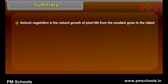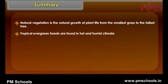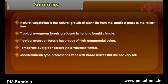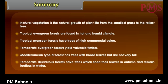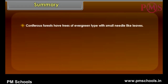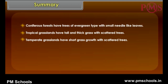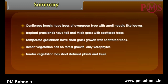Summary: Natural vegetation is the natural growth of plant life from the smallest grass to the tallest tree. Tropical evergreen forests are found in hot and humid climate. Tropical monsoon forests have trees of high commercial value. Temperate evergreen forests yield valuable timber. Mediterranean type of forest has trees with broad leaves but are not very tall. Temperate deciduous forests have trees which shed their leaves in autumn and remain leafless in winter. Coniferous forests have trees of evergreen type with small needle-like leaves. Tropical grasslands have tall and thick grass with scattered trees. Temperate grasslands have short grass growth. Desert vegetation has no forest growth, only xerophytes. Tundra vegetation has short-statured plants and trees.